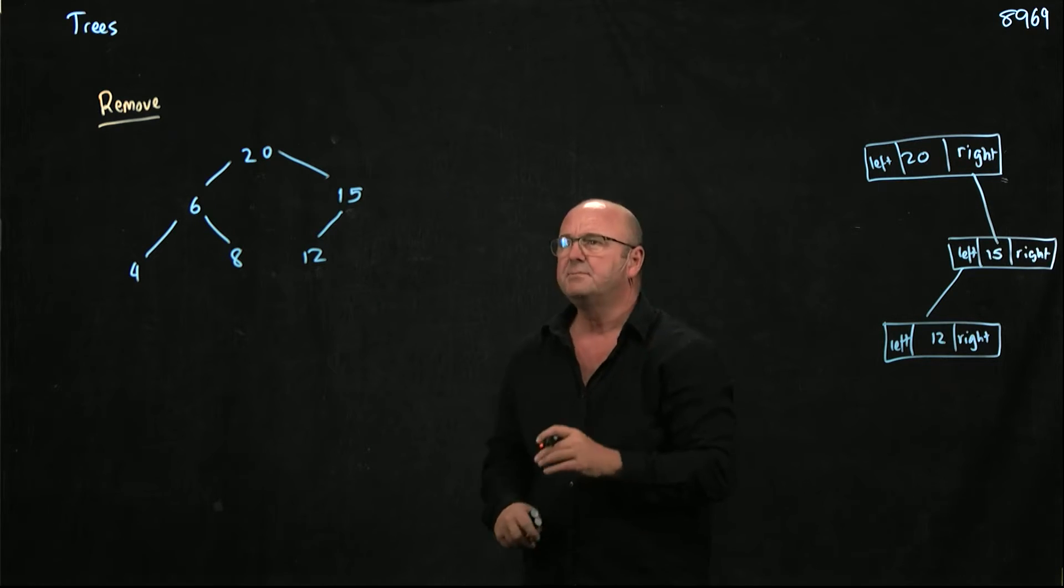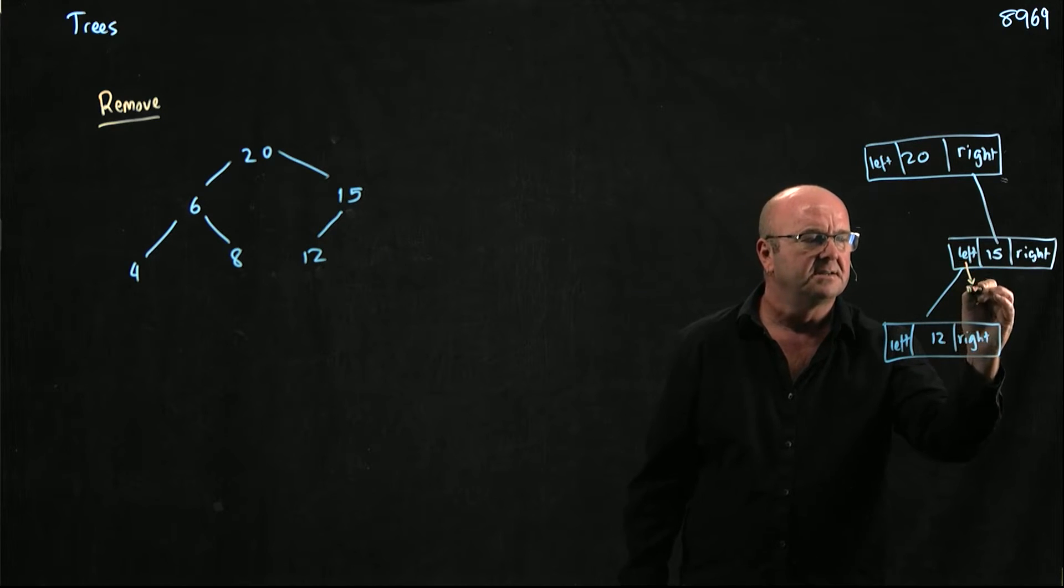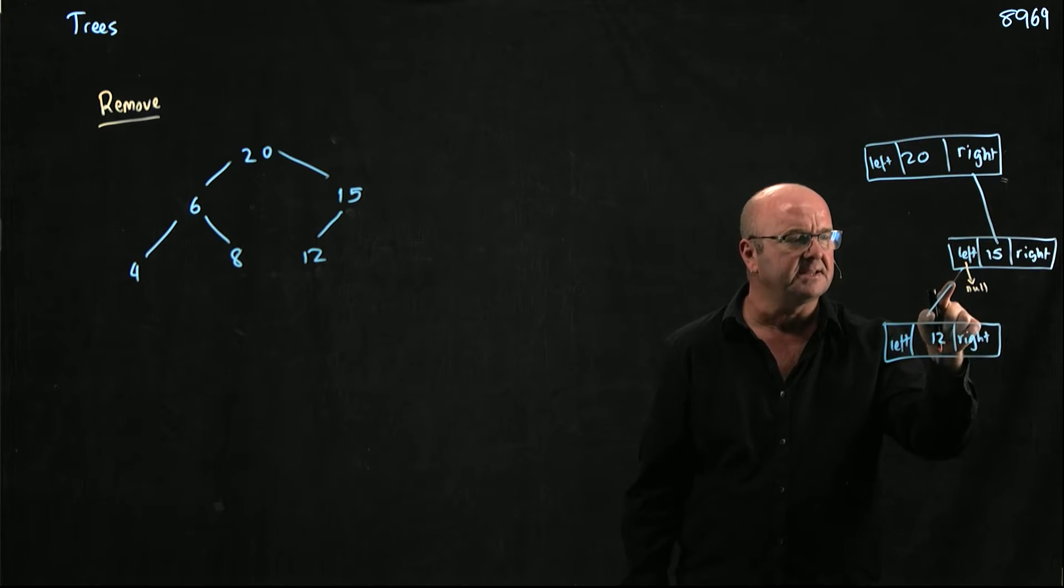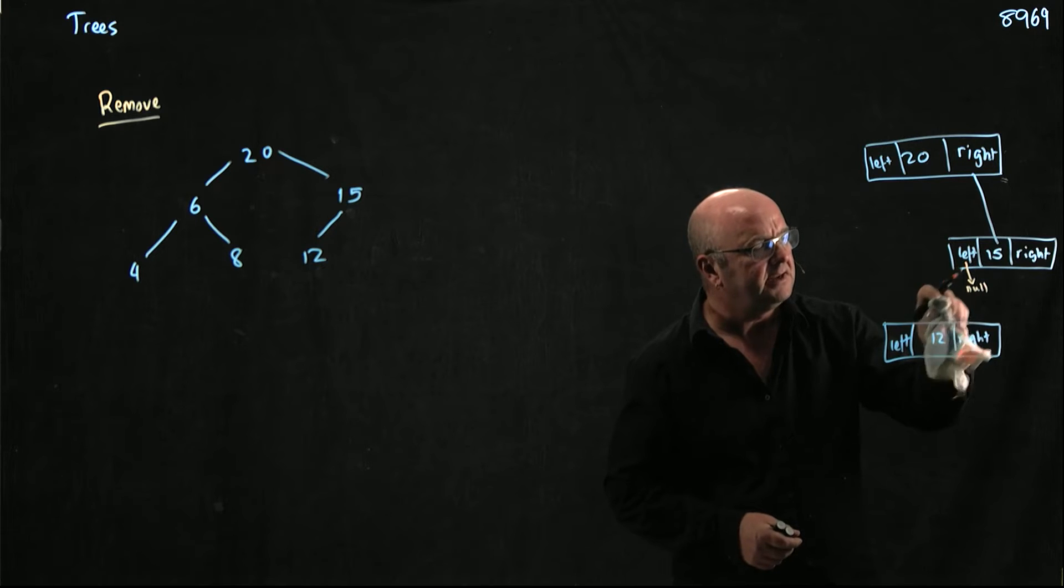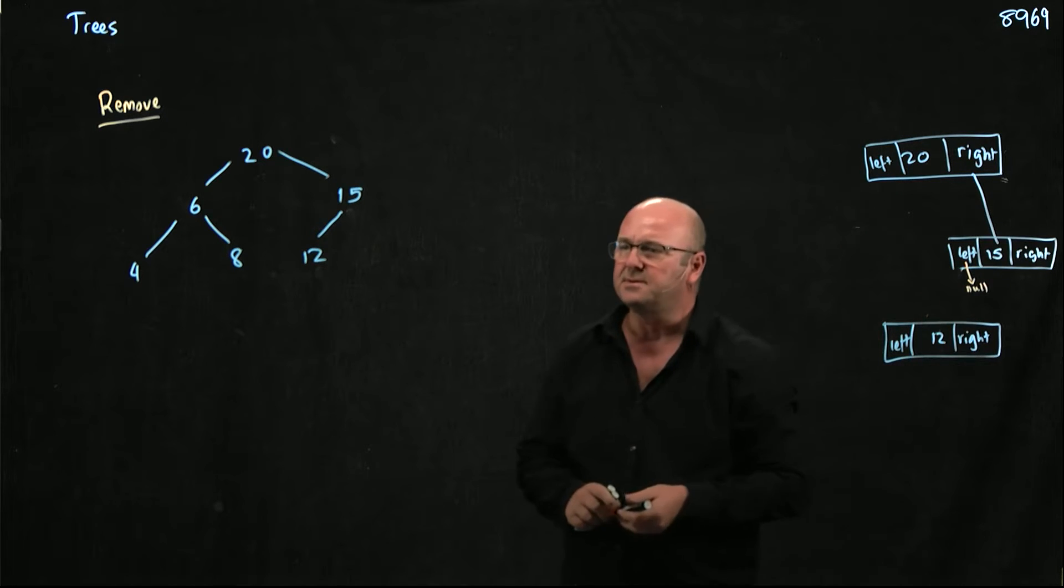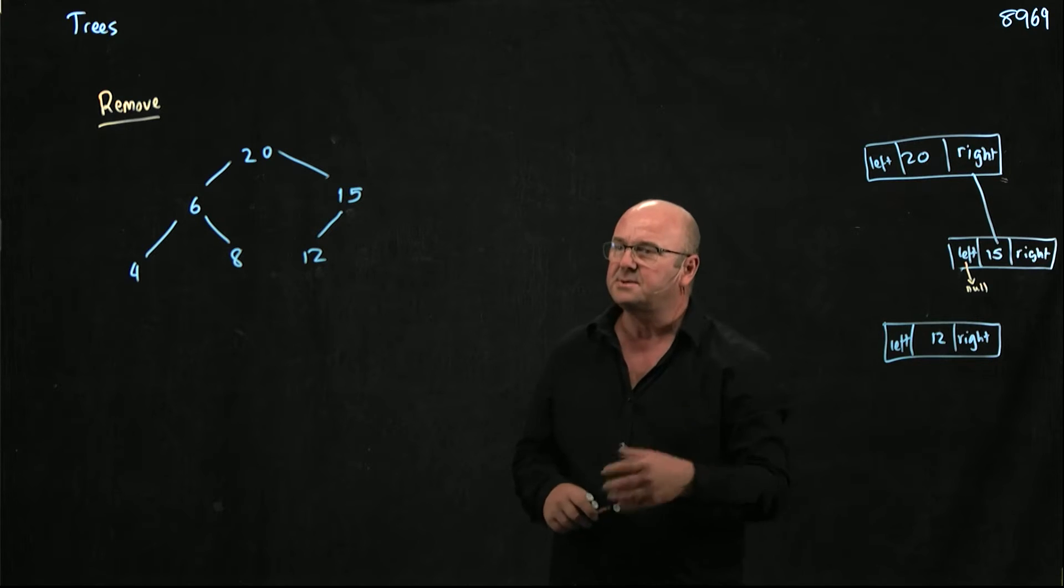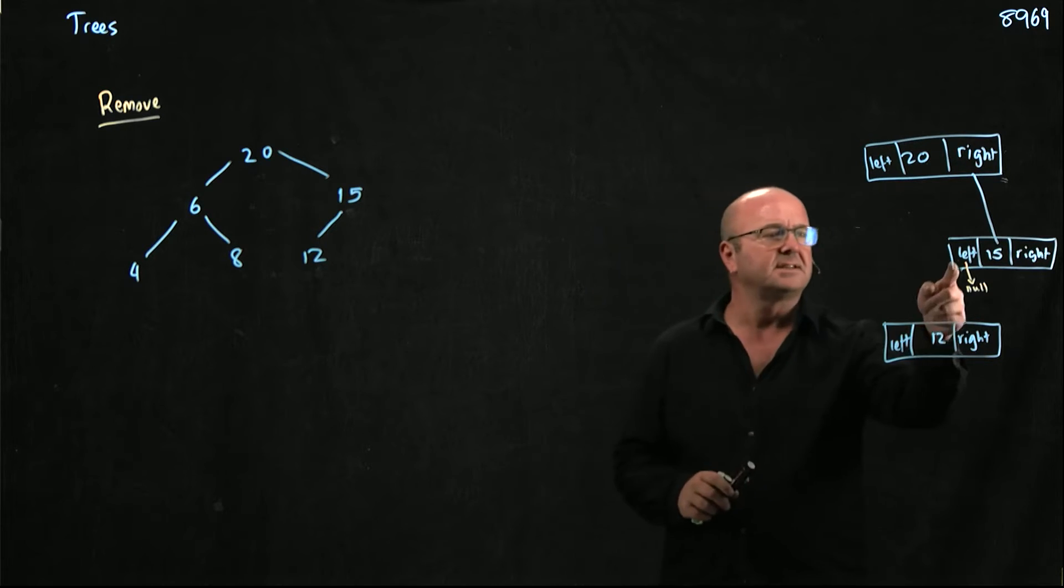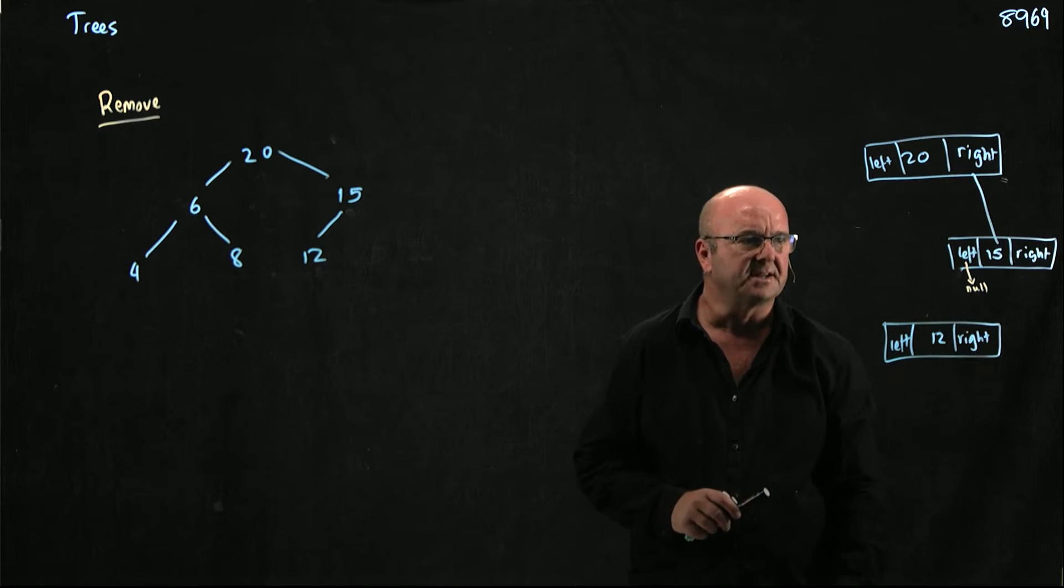If we want to remove the 12, all we've got to do is set this 15's left pointer to null. That will break this link here between the 15 and the 12. And then at the end of the method the 12 will get garbage collected and go away. So just as we saw with the linked list, we basically set that to null. This node will go away and get garbage collected. Easy.